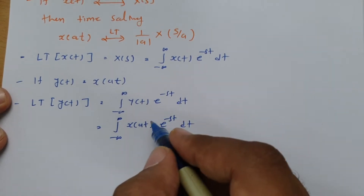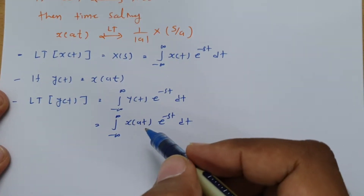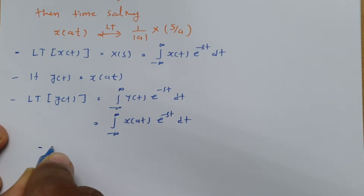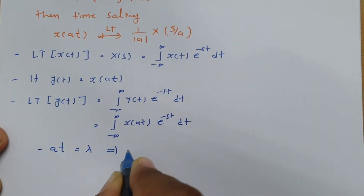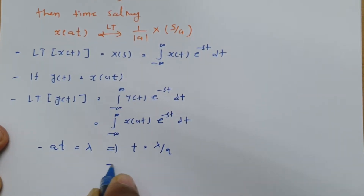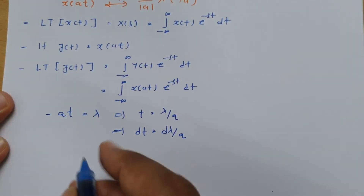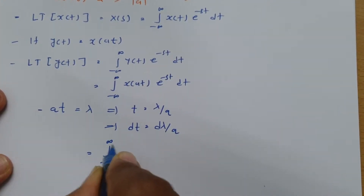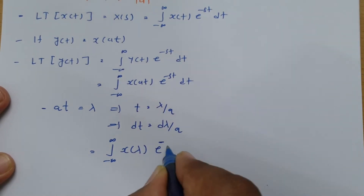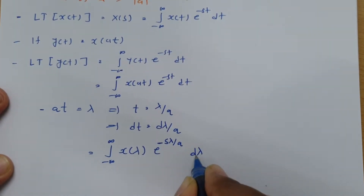Now to make this formula in terms of Laplace transform easier, I will consider at equals to a constant lambda. So if at = λ, then t = λ/a and dt = dλ/a. Let us place this substitution into the integral, so we get the integral from minus infinity to infinity of x(λ) · e to the power minus s·λ/a, and dt is replaced by dλ/a.